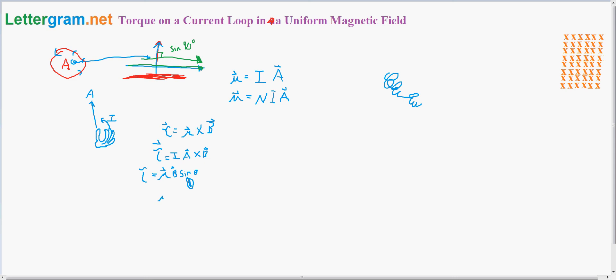So then you just take the magnetic moment and multiply it by the magnetic field, and that'll give you the torque.